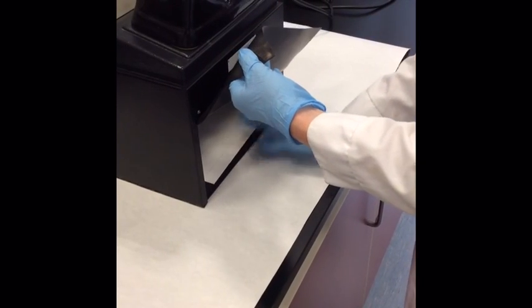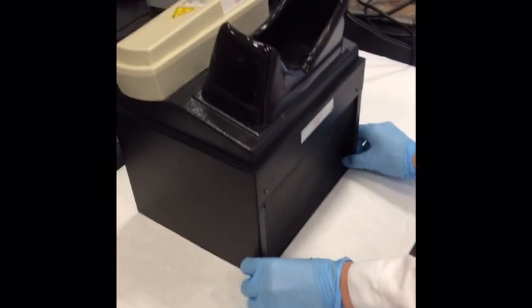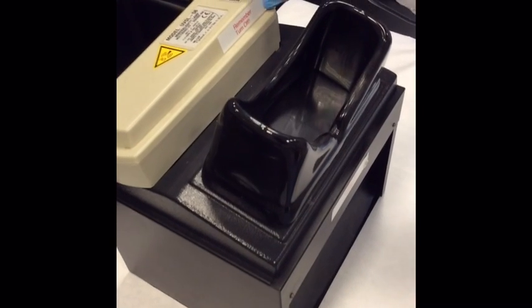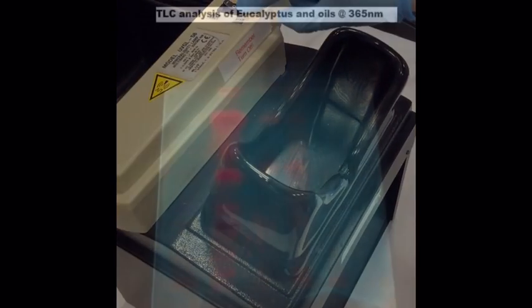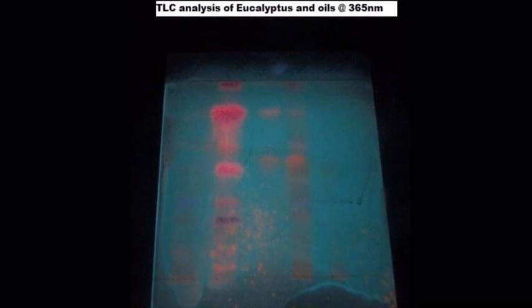When visualizing the plate in the UV chamber, make sure you use a pencil and circle the bands, as the bands will not be visible in normal light. You can use the camera in the lab to photograph the plate under UV light inside the UV chamber.